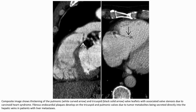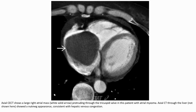This CT image shows thickening of the pulmonary and tricuspid valve leaflets associated with stenosis due to carcinoid syndrome. Fibrous endocardial plaques develop on the tricuspid and pulmonary valves due to tumor metabolites secreted directly into the hepatic vein in patients with liver metastasis. Another CT image shows a large right atrial mass protruding through the tricuspid valve.